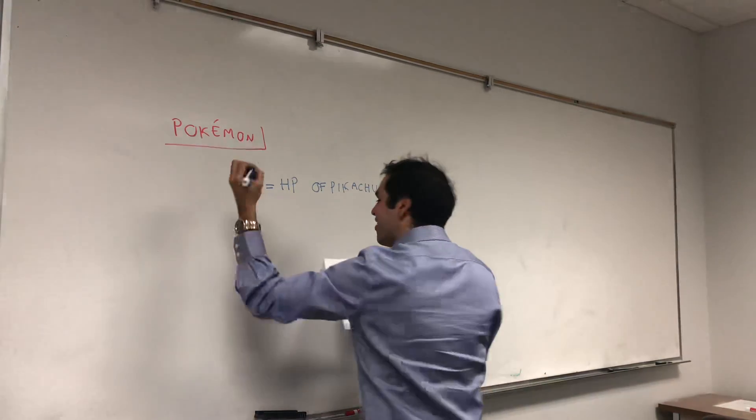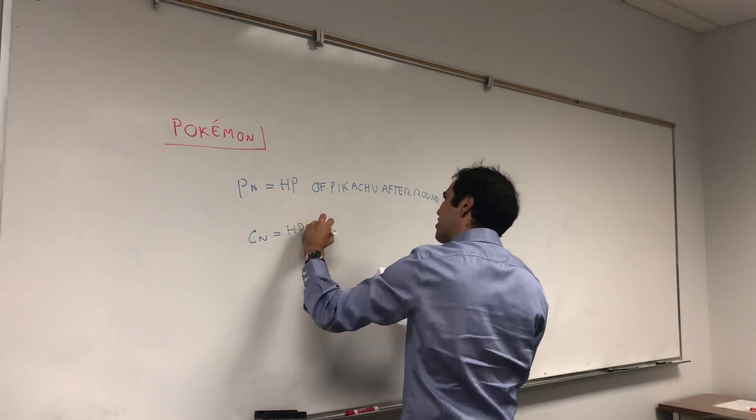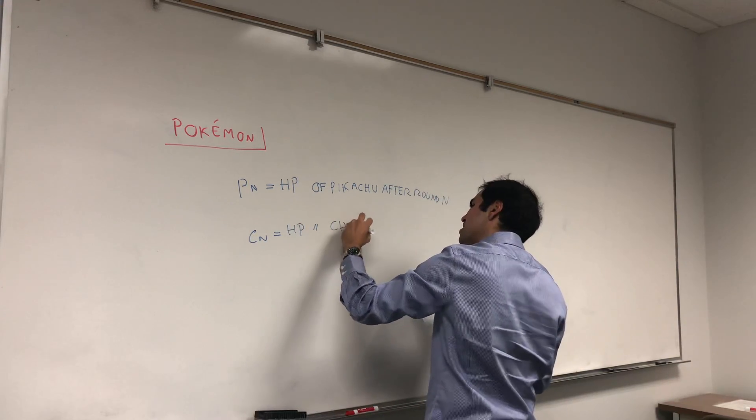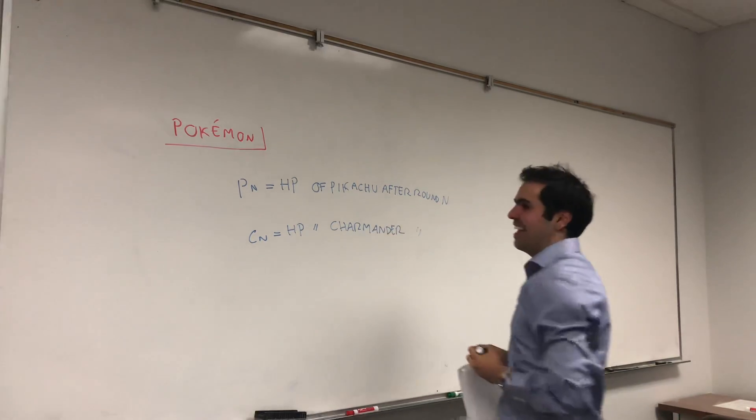So today we have two contestants Pikachu and Charmander and PN is the hit point so HP of Pikachu after round N, so at the end of round N.